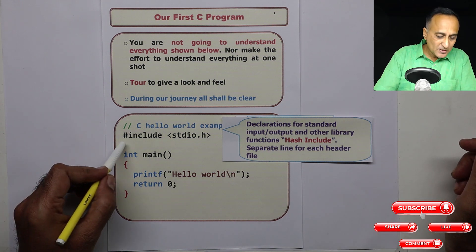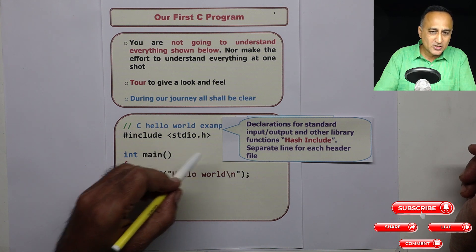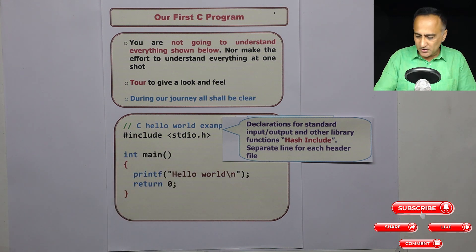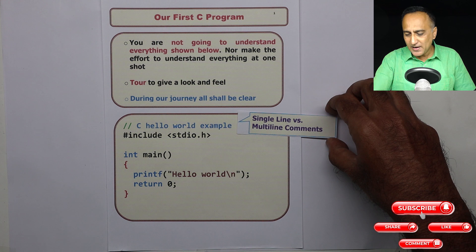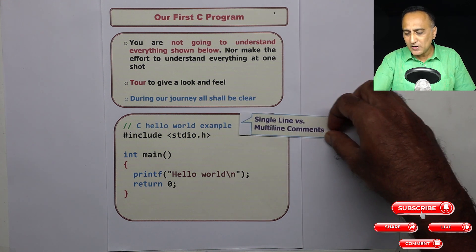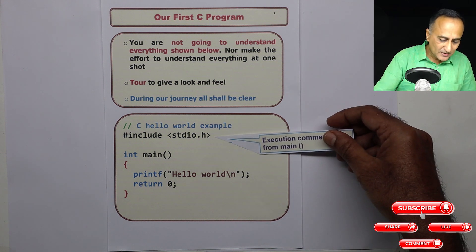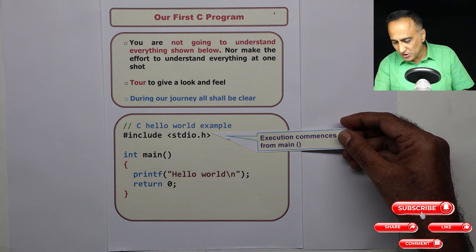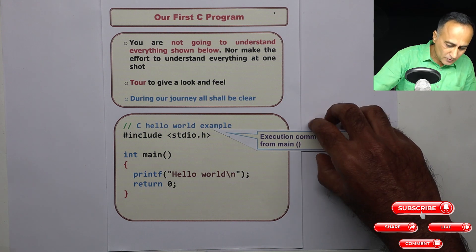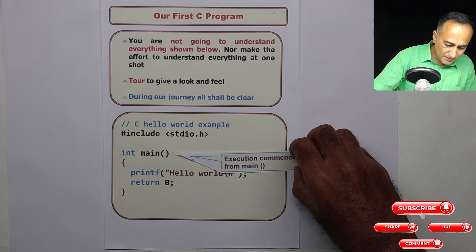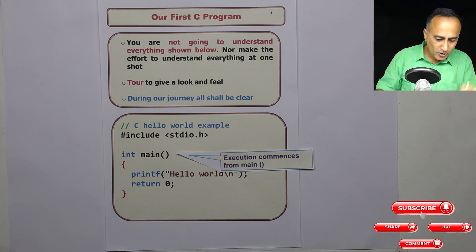The way you write it is — suppose you're using a math function, you will write hash include angle bracket math.h. So every header file will be on one particular line. Every program in C will have something called the main function. Main is important because without it, the compiler will not know from where to start the execution. The execution of your code is going to commence from the main, so main is going to be the starting point of execution.